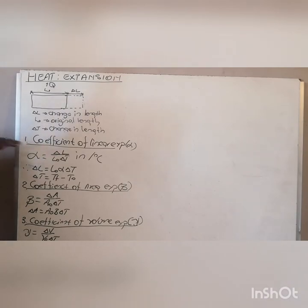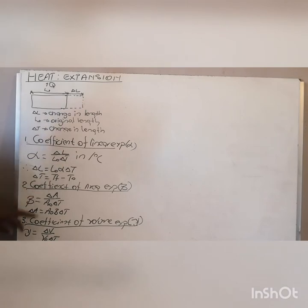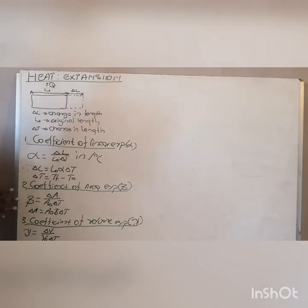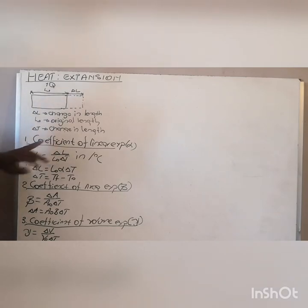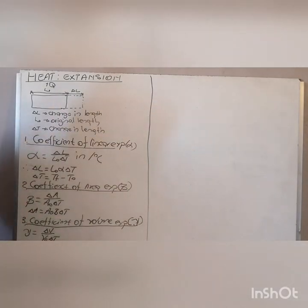The basic one is the coefficient of linear expansion. You just replace your length with area if you are dealing with area, and replace your length with volume if you are dealing with volume. All your coefficients are derived from the original linear coefficient. Most of the time they will give you the coefficient of linear expansion, and then you will determine the other coefficients. Let me write for you the relationships between the three coefficients.